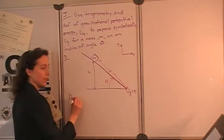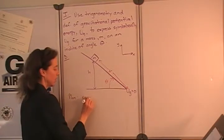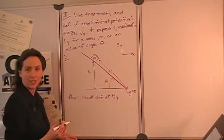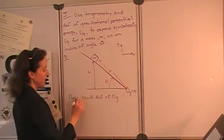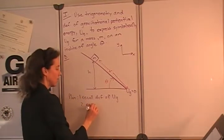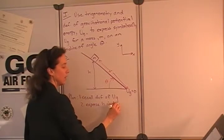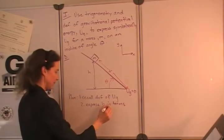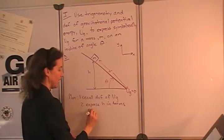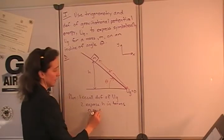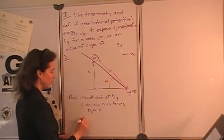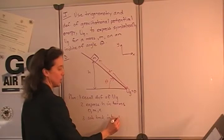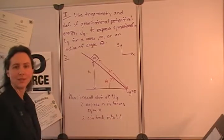So our plan is going to be to recall the definition of gravitational potential energy, which as you recall is mgh. And then we need to express that height in terms of the geometry of this incline, so in terms of theta and x. Then we're going to substitute that back into our definition for the gravitational potential energy to come up with a general symbolic expression.